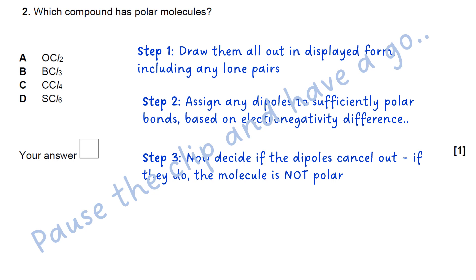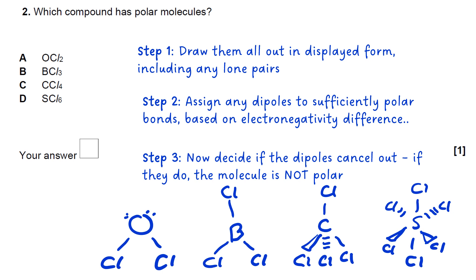Okay, welcome back. I'm assuming you've had a bash at these four. I'm going to put in the drawings of the four molecules, and straight away we can see that the dipoles cancel in the three on the right hand side. You don't even need to put the delta plus and delta minus in. You can see it just by visualizing it. So that means that the first one must be the correct answer.